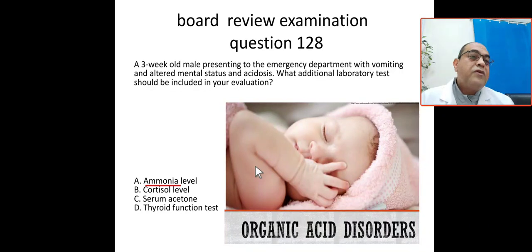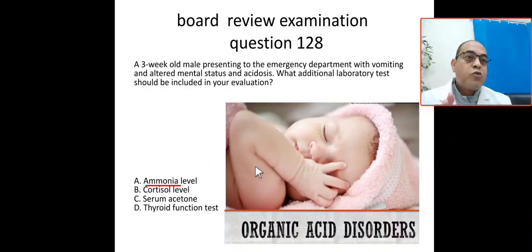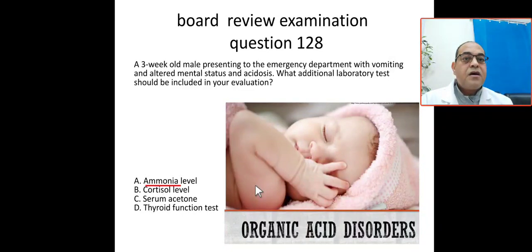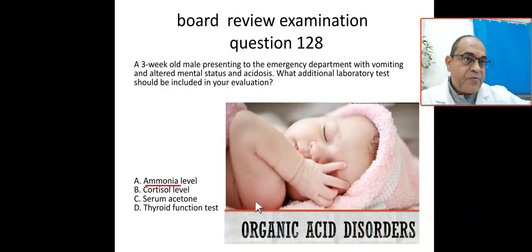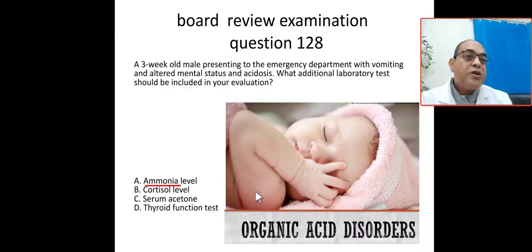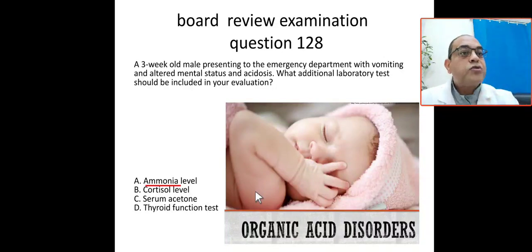Looking at the answer options: A — ammonia level, yes, for sure. B — cortisol level: if you consider congenital adrenal hyperplasia, you need a hormonal panel including 17-hydroxylase. C — serum acetone. D — thyroid function test. While multiple answers are possible, the most correct answer is ammonia, because we need ammonia and lactate to rule out inborn error of metabolism in this critically ill infant.